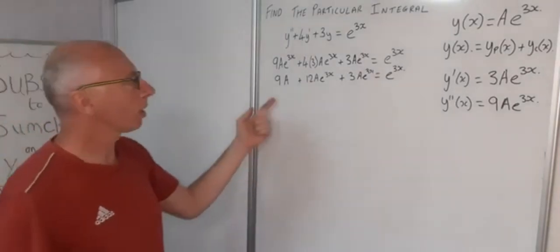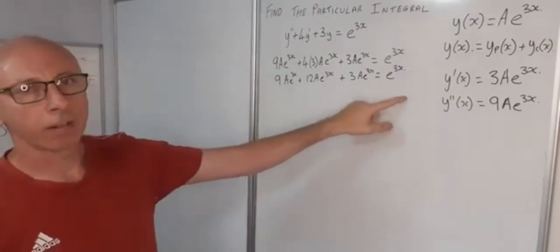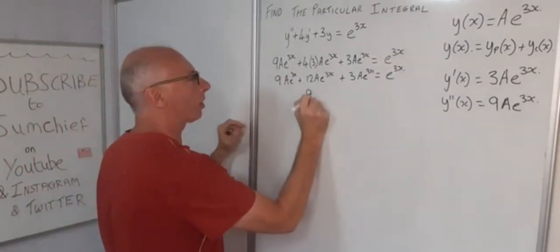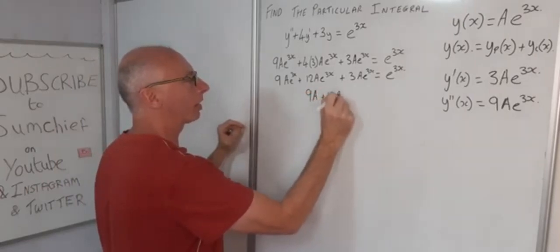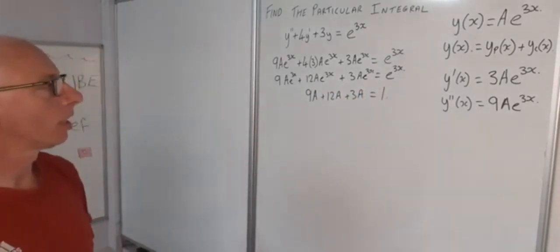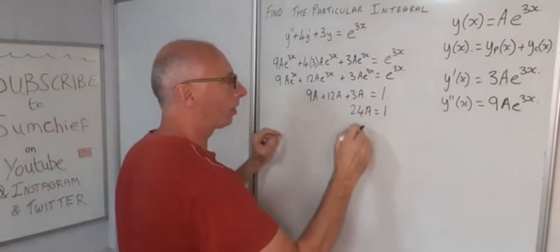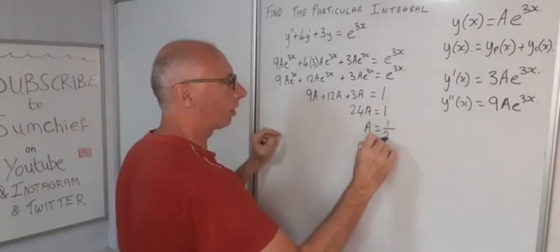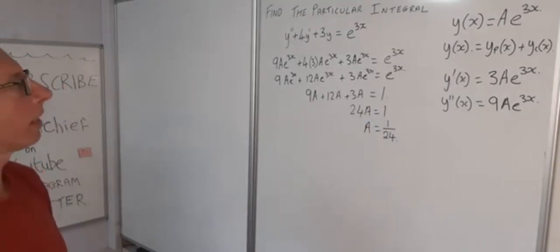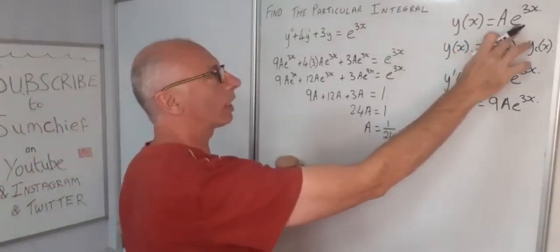Now we divide everything through by e^(3x), which gives us 9a + 12a + 3a = 1. That gives us 24a = 1, so therefore a = 1/24. Therefore our particular integral takes the form of (1/24)e^(3x).